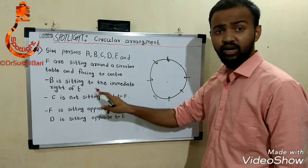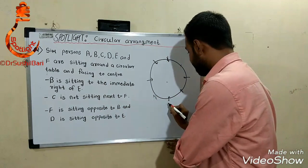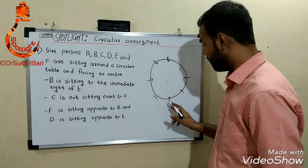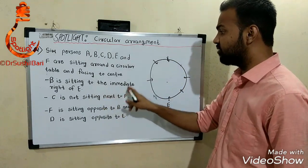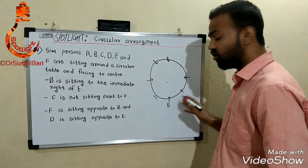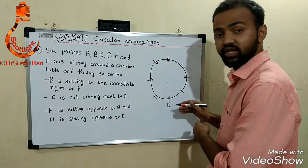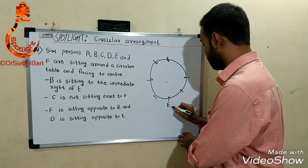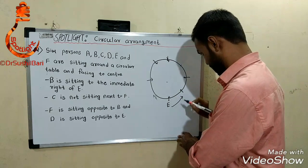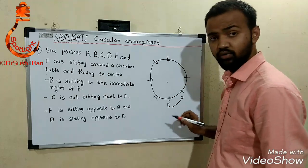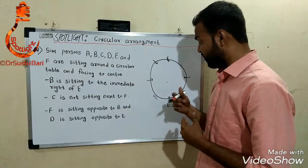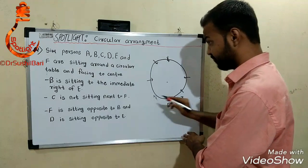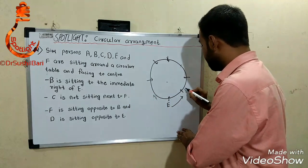B is sitting to the immediate right of E. All six persons are facing the center. Suppose E is placed here — since E is facing inside the circle, the right side is the anticlockwise direction. I already told you in the last lecture: if a person is facing inside, the right-hand side is anticlockwise. So B will be placed here to E's anticlockwise side.